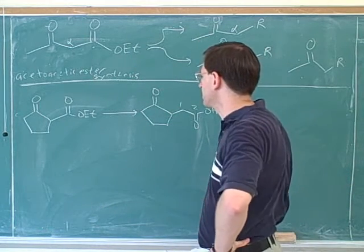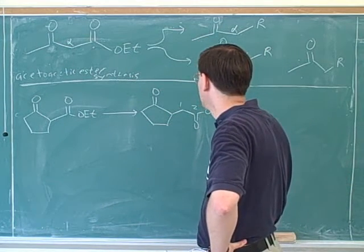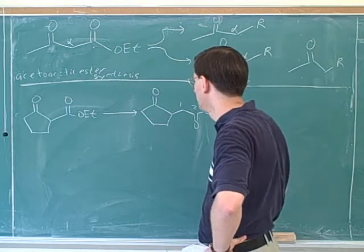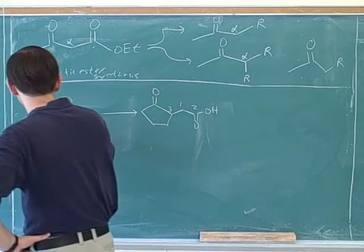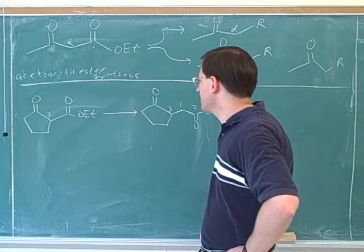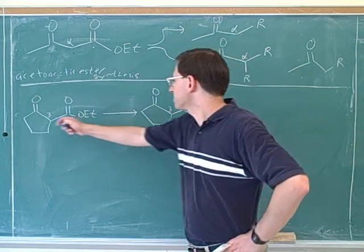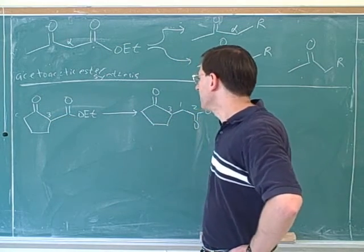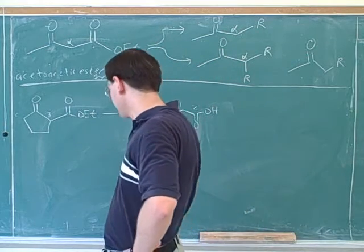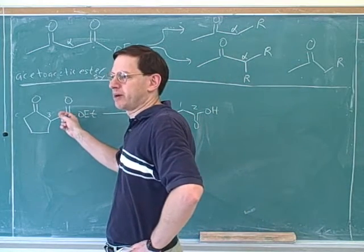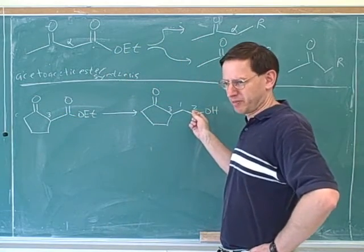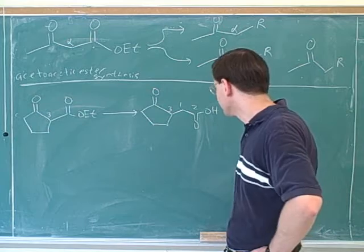We can put in some numbers here — let's call this the number 3 carbon. The only carbon that I'm sure is the same in both structures is the number 3 carbon. The reason why the first idea of simple hydrolysis won't work is that if we just did hydrolysis, that would turn this carbon into a carboxy carbon, but it wouldn't add this extra carbon. So our basic problem is we need to add an extra carbon here.